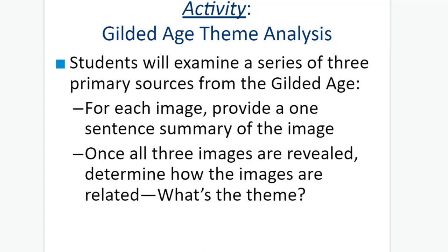You're going to examine a series of three different primary source documents or pictures from the Gilded Age. For each image, I'm going to pause it during this lecture. In class, we'll stop and discuss it, and I want you to write one sentence summary of the image. If you're absent or doing this for makeup, make sure you're taking this into your notes. Once all three images are revealed, we'll determine how the images are related and talk about the different themes incorporated. Pause the video and take down some notes — write one sentence summary of what you see.